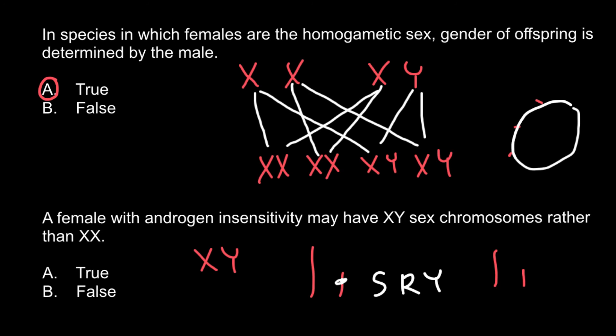So basically two mechanisms exist. One would be damaged SRY gene on the Y chromosome. Another one would be damaged gene on the autosome that codes for the receptors that are sensitive to the presence of the male's hormones. So as you see, a female with androgen insensitivity may have XY sex chromosomes rather than XX. And this is true. Genotypically this is going to be male, but phenotypically this is going to be a female.